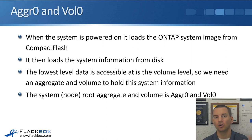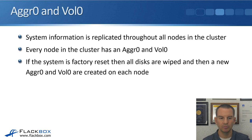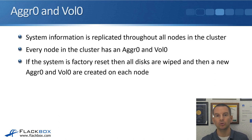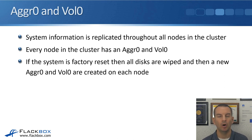Vol 0 and aggregate 0 are not used for any normal user data — they are used purely for system information. The system information is replicated throughout all the nodes in the cluster. For example, if you open an SSH session and connect to the cluster management address homed on node 1, when you write information it will be written to node 1 first into its vol 0, and then replicated over the cluster interconnect to all other nodes. Every node in the cluster ends up with the same information in their vol 0s.